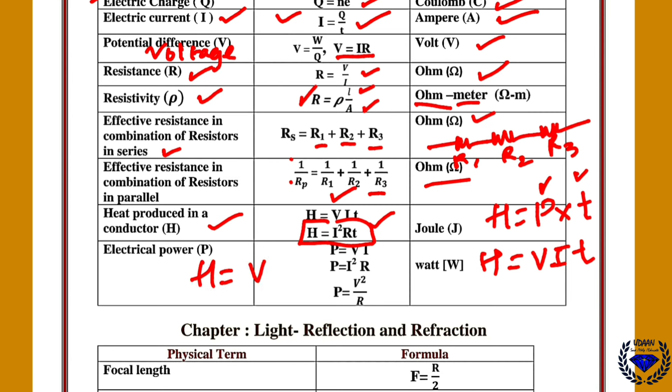When V is given H is equal to V square by R into T. So V square by R into T will give you heat energy. I square RT also gives you heat energy only. Now coming to another set, that is electric power. SI unit is Watt. P is equal to V into I, I square R, or V square by R.